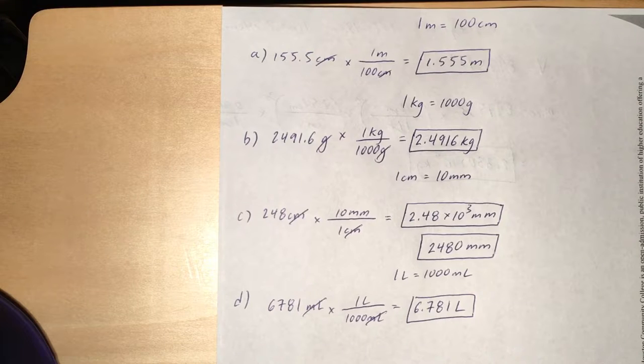So we're going to just put the centimeters in the denominator, meters up top. So 155.5 divided by 100 is going to give you 1.555 meters.